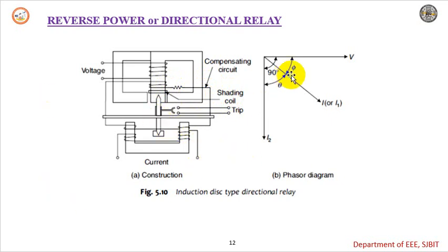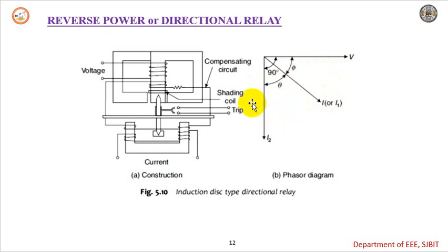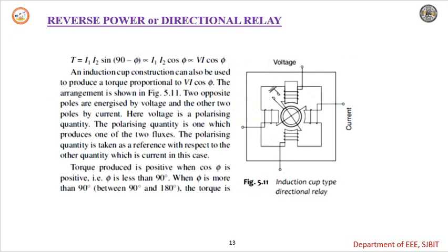This is the phasor diagram between voltage and current. This is the current flowing in the voltage coil. Since it acts as an inductive circuit, we can treat it as a pure inductive circuit. The angle between the voltage and current in an inductive circuit is 90 degrees. The angle between the voltage coil and current coil is phi, and between the currents of both coils it is angle theta. The torque expression can be written as: torque is proportional to VI cos φ, or equivalently I1·I2·sin(90° − φ), which again equals I1·I2·cos φ, and this is directly proportional to VI cos φ.